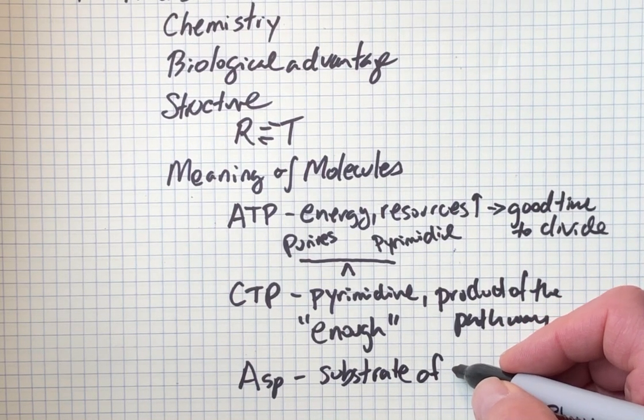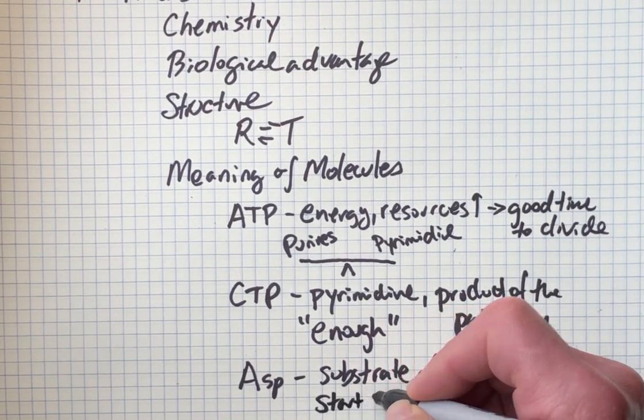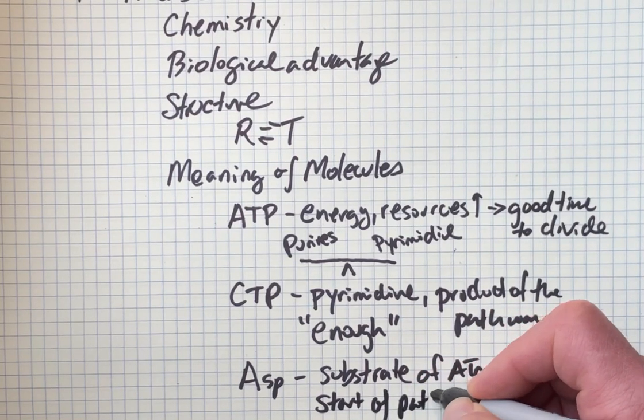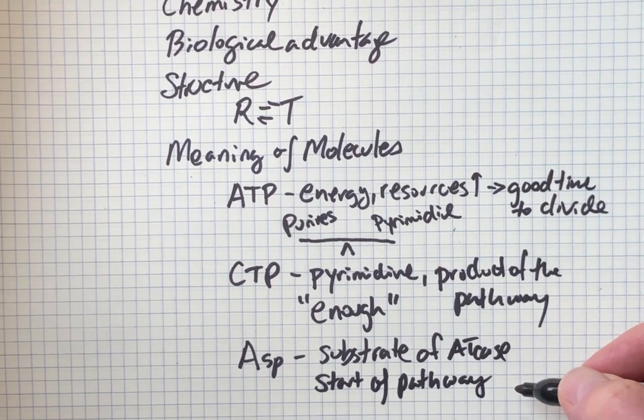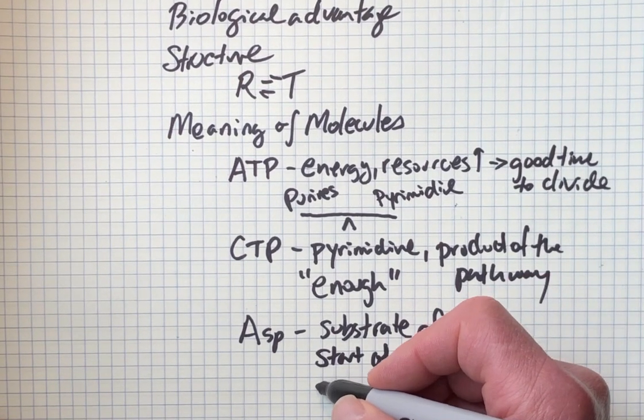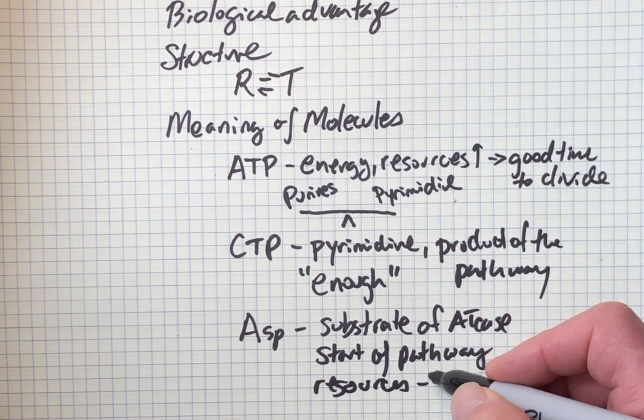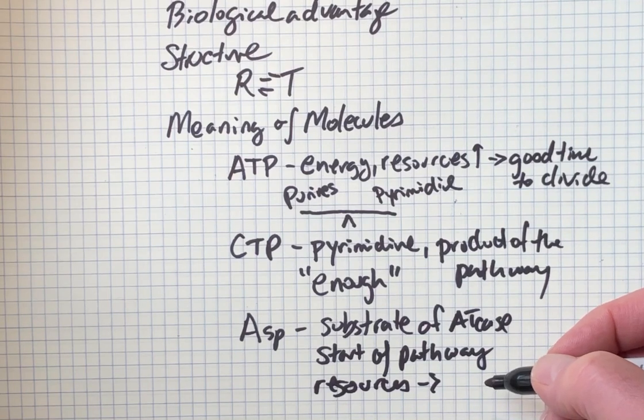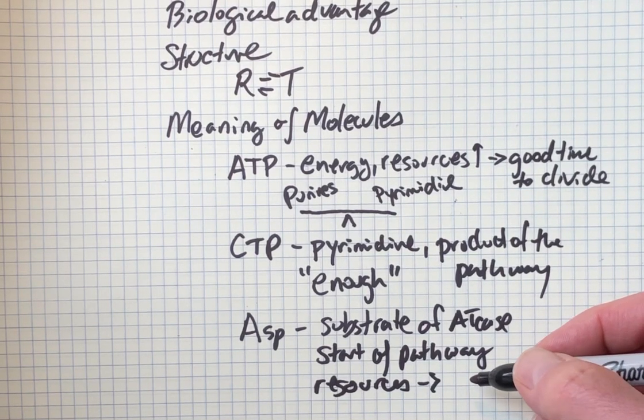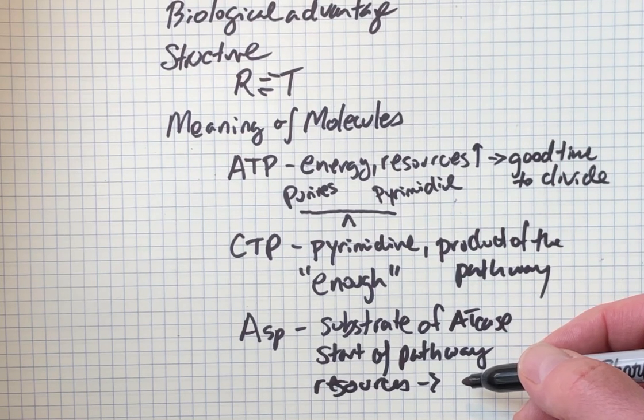It's also the start of the pathway, and similar to ATP, it informs the cell about resources. The decision of whether to make new cells is positively influenced by high levels of the substrate aspartate.